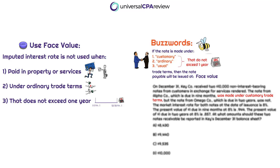Imputing interest is not required on certain payables — even those with no or very low interest — if this is in the ordinary course of business and the terms are one year or less, or if the note is paid on property or services rather than cash. So if you're scanning a question and see phrases like 'customary trade terms,' 'ordinary trade terms,' or 'usual trade terms' and the duration doesn't exceed one year, then that note is going to be issued at face value. Sneaky — got to be on the lookout for that.